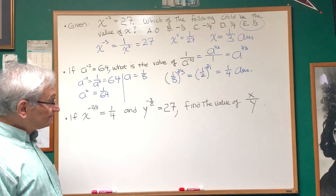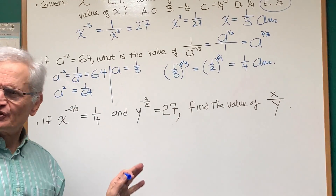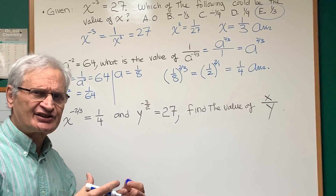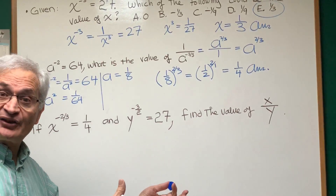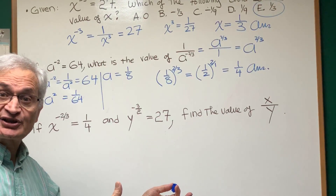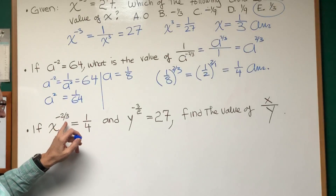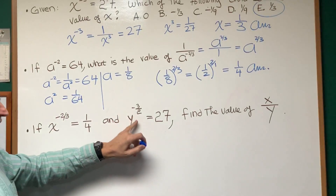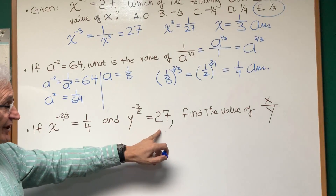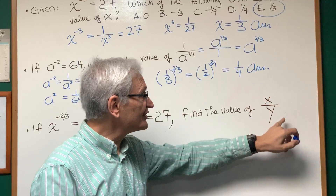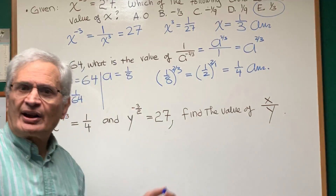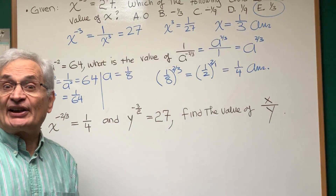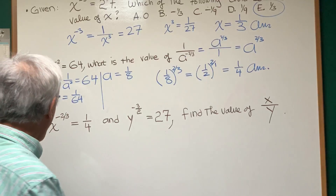Let's go to the third one — a little bit more complicated, but it shows you the different contexts under which you can find these algebraic exponent problems. X to the negative two thirds is one fourth, and Y to the negative three halves is 27. Find the value of X over Y. First thing we want to do is find the value of X and find the value of Y.